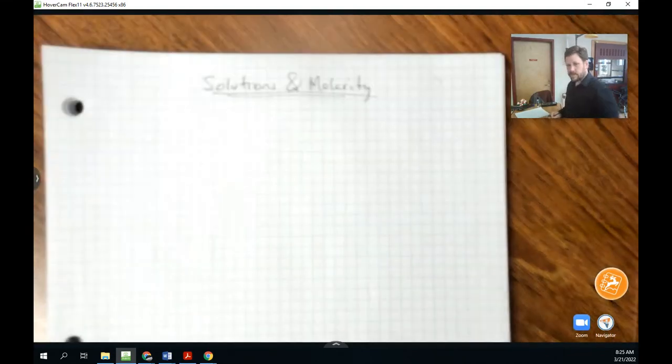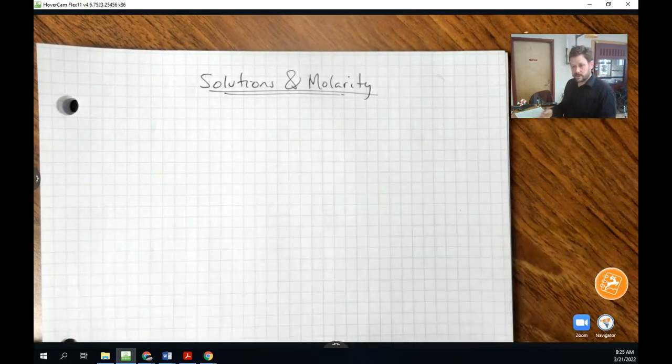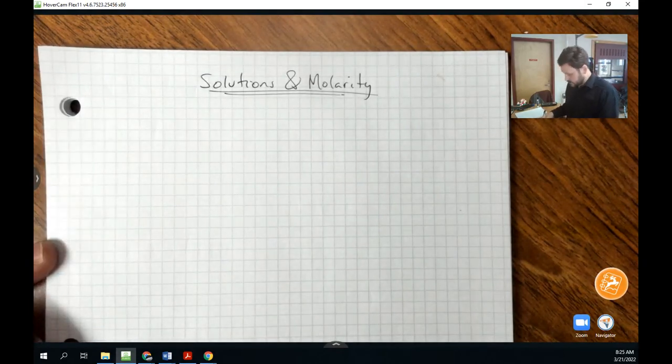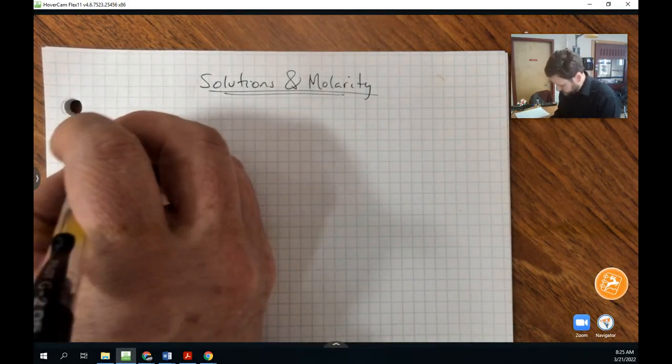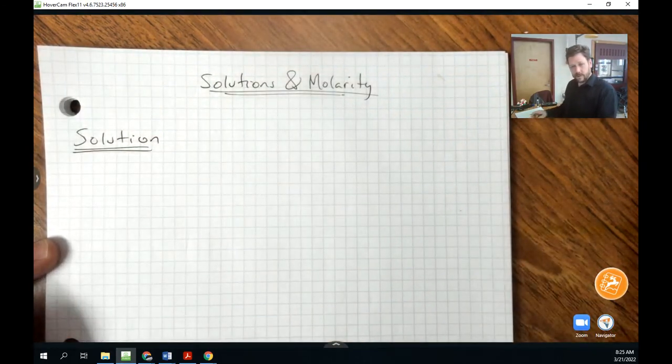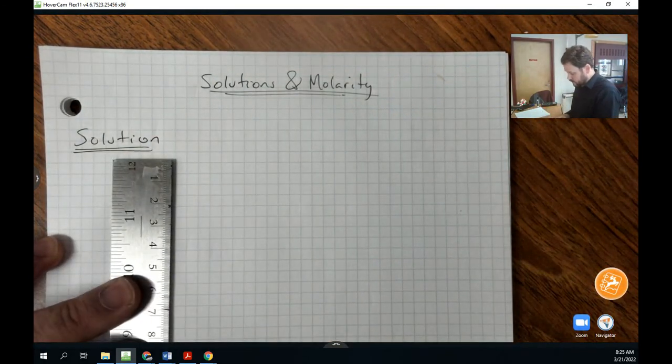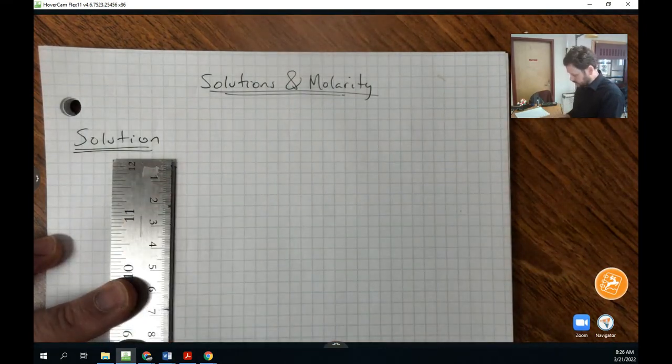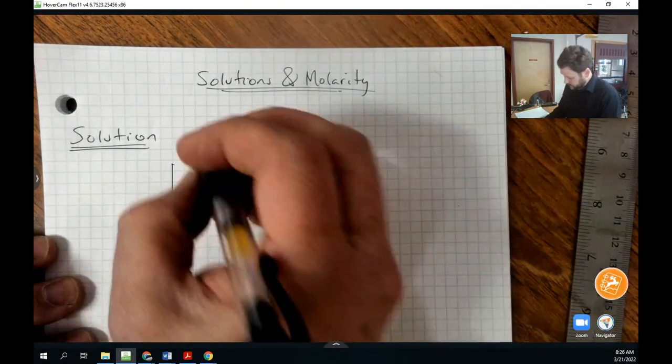So I'm going to format these notes in a way that allows us to give some examples and make some columns here. If you start by writing the word solution, we're going to put a definition of solution off to the left, but I'm also going to reserve some space below here in the margin to add some things later.